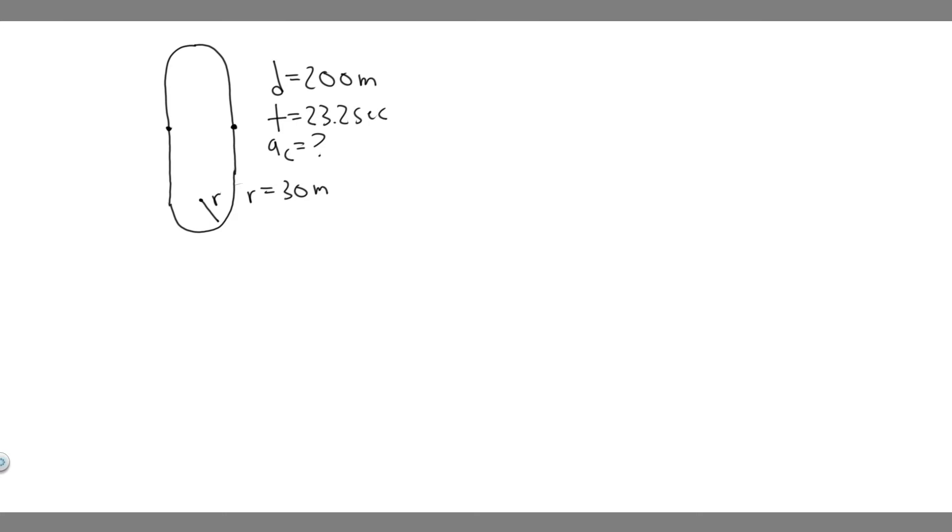In order to solve this problem, there's a formula we're going to use, which is basically a sub c equals the velocity squared over r. So notice we're given the radius that he's going to be running around this part, which is r. So we have that.